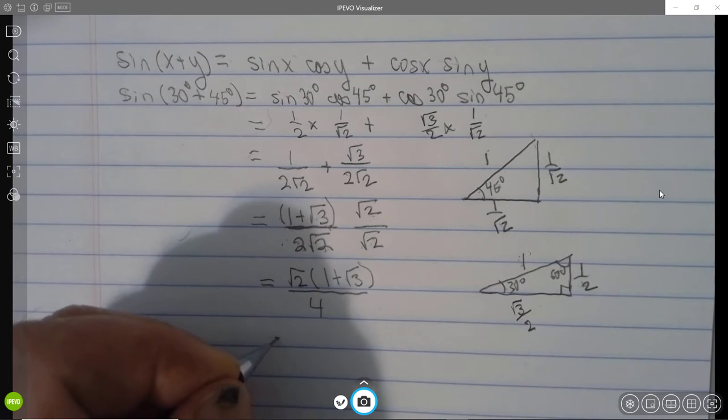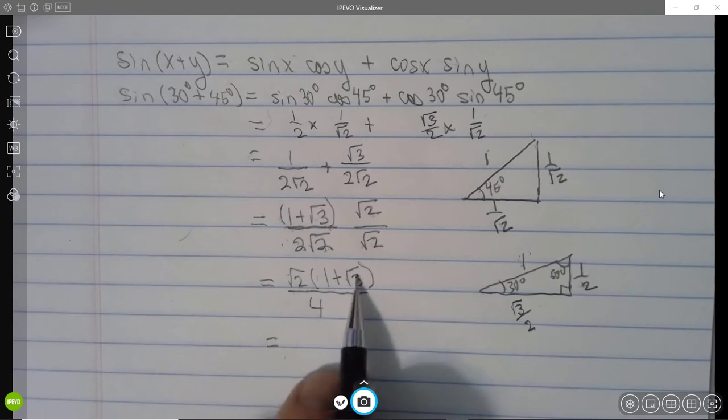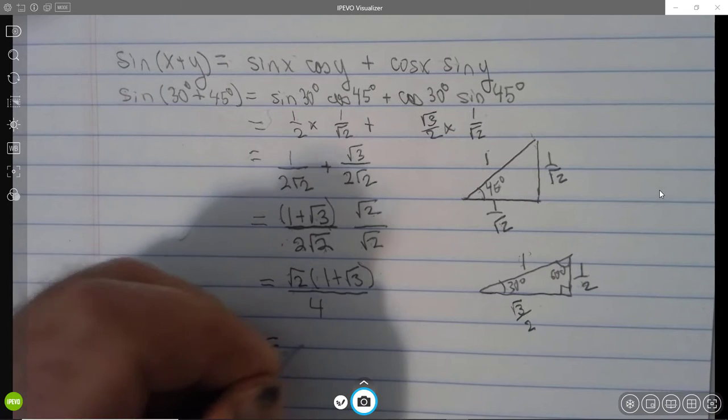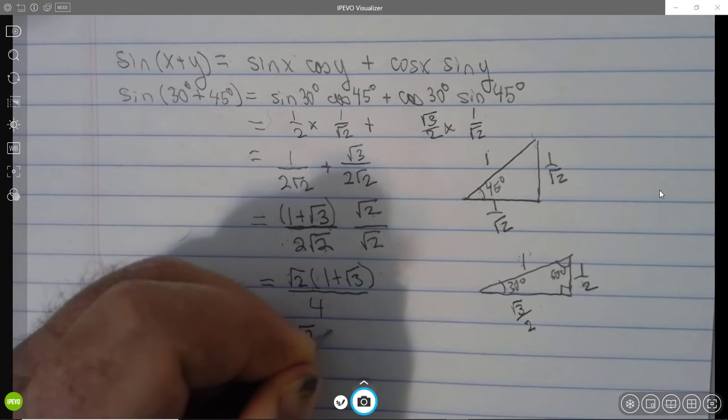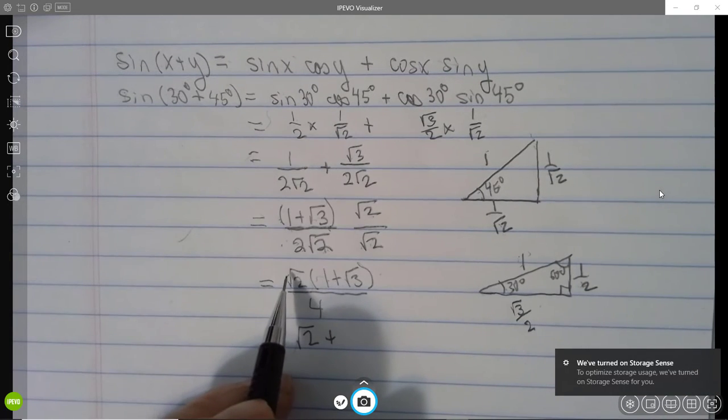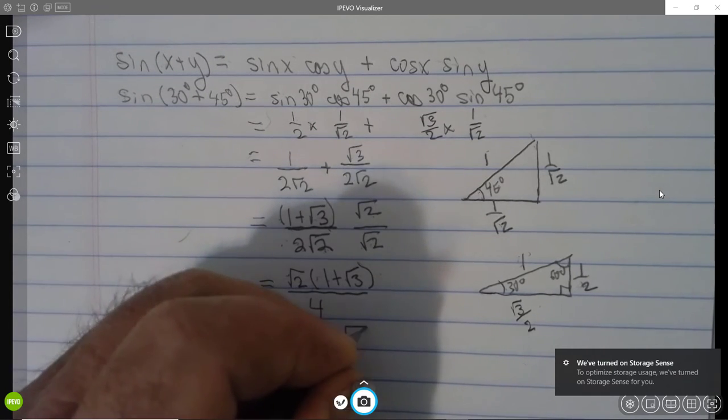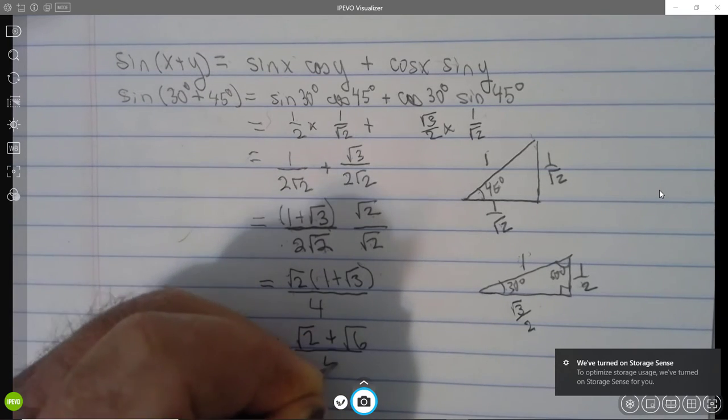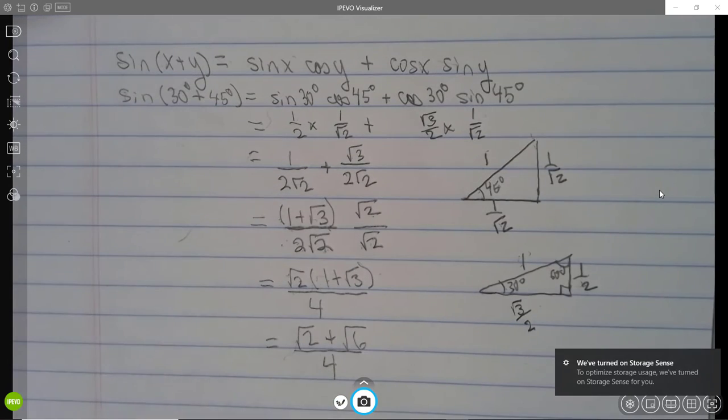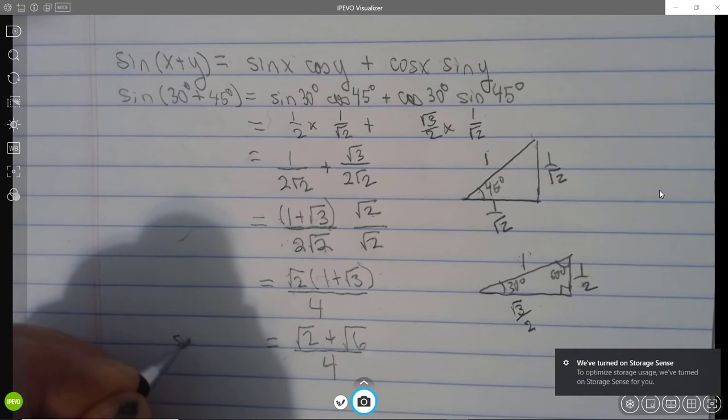And you know, that's one way of writing it. Another way you could distribute the root 2 across that sum, root 2 times 1 is root 2. And root 2 times root 3 is root 6, and that's divided by 4. So there you go. That is the sine of 75 degrees.